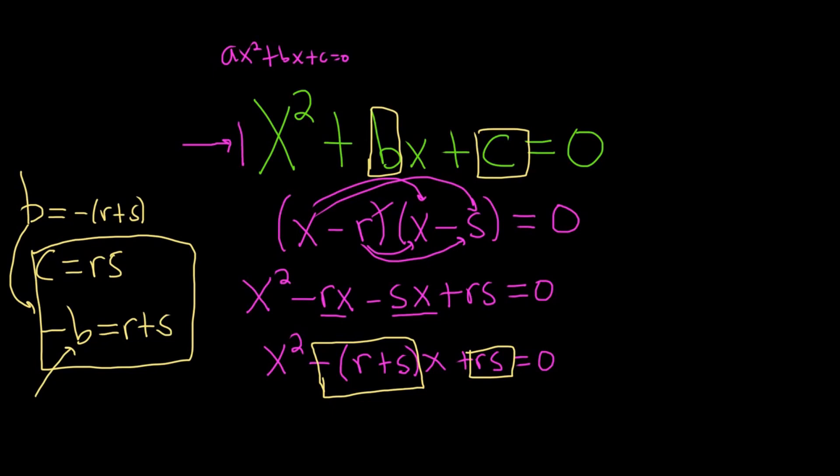Notice another observation that Po-Shen Loh made is that if you divide this by 2, we get -b/2 equals (r + s)/2. So the roots still add to negative b, but their average is -b/2. So this is now the leap he makes.